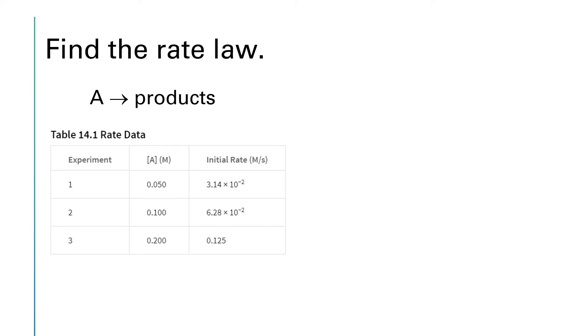So let's look at what our rate law says. We have a rate law that says that the rate is equal to some constant times the concentration of A raised to some order. What I'd like to do is take the ratio of two experiments and take the ratio of the rate laws for those two experiments.